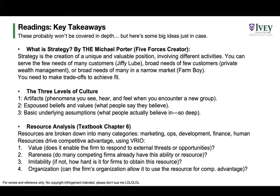The three levels of culture you should know: first, artifacts — what you see and observe at a surface level when you encounter a new group. Second, espoused beliefs and values — when you ask people what they actually believe. Third, basic underlying assumptions — what people actually and deeply believe. For example, the assumption that the case method is great because you don't have to do other things.